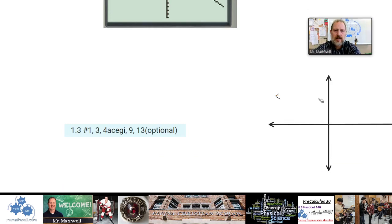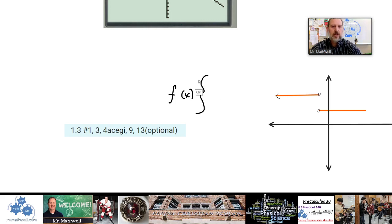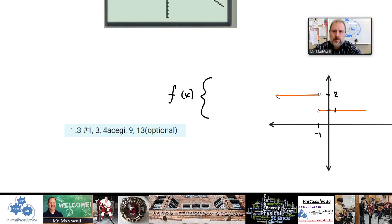Here's another example — something like the Heaviside function — showing a clear jump discontinuity, so it's not a continuous function. This one has a solid dot at one value and an open circle at another. Let's say the horizontal line on the left is y = 2, the jump occurs at x = −1, and the line on the right is y = 1.